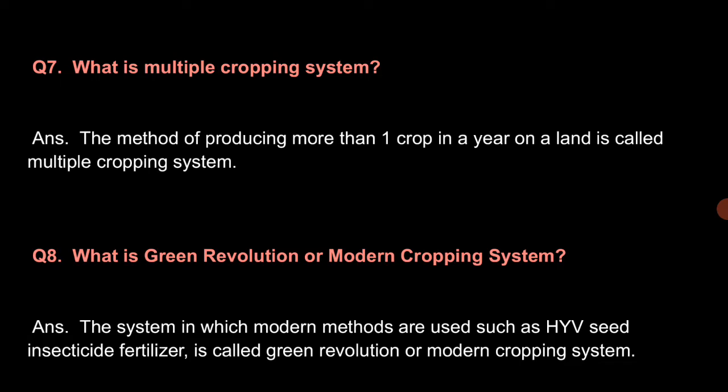What is green revolution or modern cropping system? The system in which modern methods are used, such as HYV seeds, insecticide, and fertilizer, is called green revolution or modern cropping system.